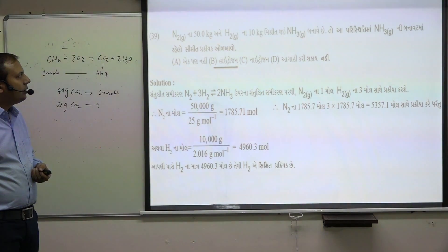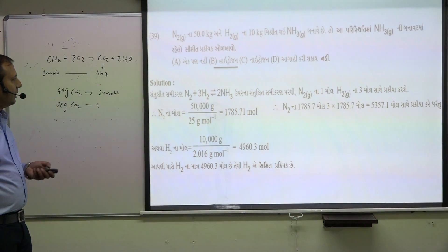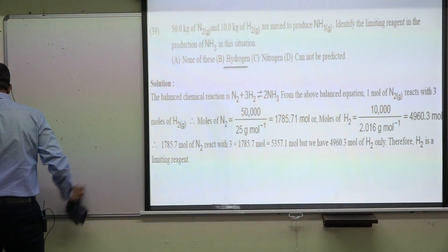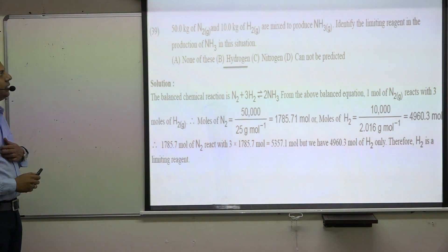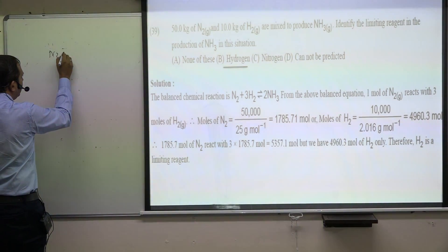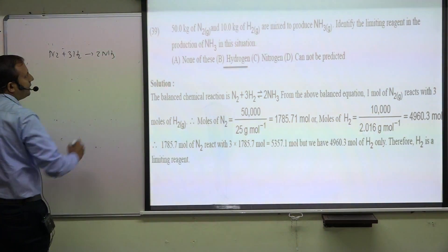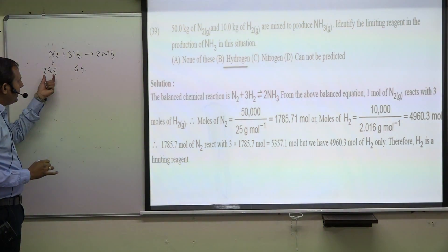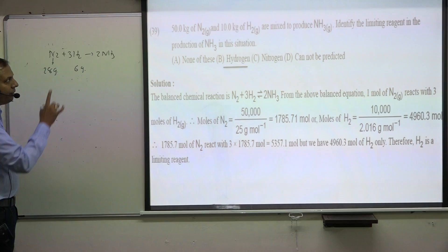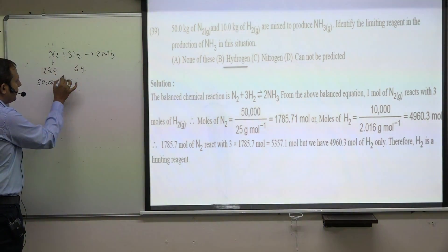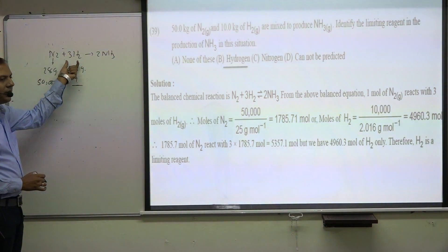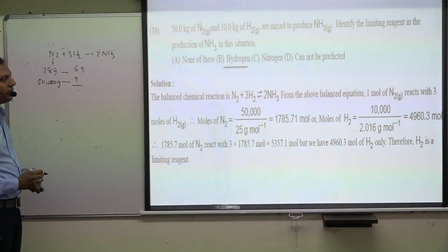N2, 50 kg and H2, 10 kg mixed to form NH3. We need to find the limiting reagent in this reaction. 50 kg of N2 and 10 kg of H2: N2 plus 3H2 gives 2 moles of NH3. For N2, 50,000 grams. We need to determine which is the limiting reagent.